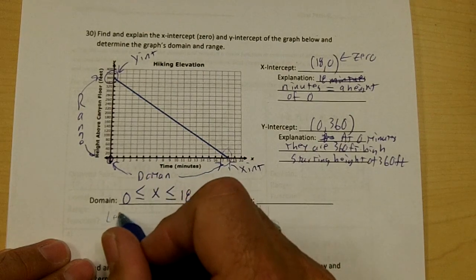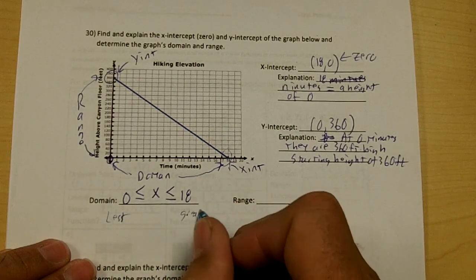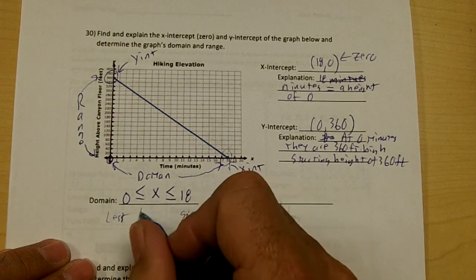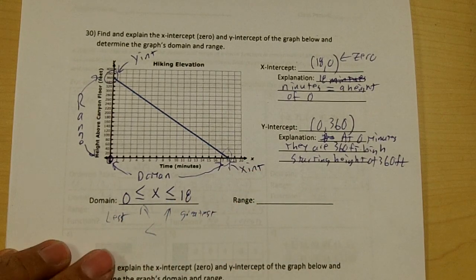You always go from the least to the greatest and this is always less than. Always, always less than. Least to greatest and less than symbols.